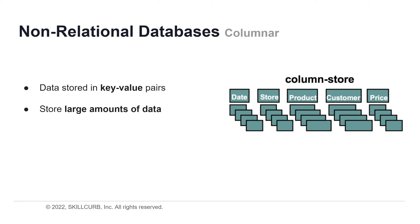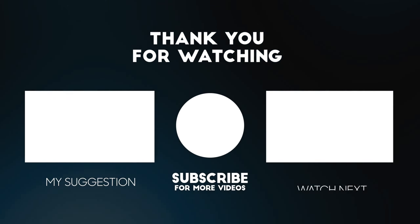Some popular cloud databases that use columnar storage are Amazon Redshift, Google BigQuery, and Snowflake. A columnar database stores its data by columns, with the data for each column stored together. Wide column databases use a concept called a key space — similar to a schema in the relational model. The key space contains column families, similar to tables in the relational model, which contain rows and columns. Within a given column family, all data is stored row by row, such that the columns for a given row are stored together rather than each column being stored separately.